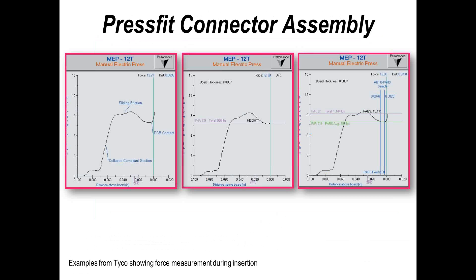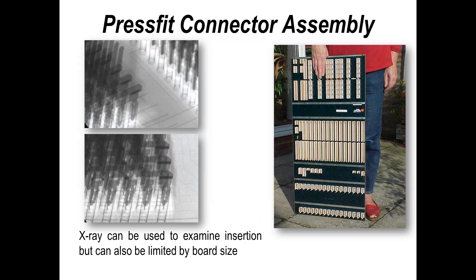Having an automated or semi-automated process minimizes the possibility of damage. The connector is positioned over the holes to check alignment, then forced into the PCB. The key thing is not to flex the board in any way — the board must be completely supported so we don't damage any previously produced solder joints. There must also be clearance on the opposite side if you've got connector pins longer than the board thickness. Most high-end companies or contract manufacturers use automated processes. The press shown here gives a force measurement, indicating the force applied. You can see the initial force, then the force as the connector goes into the hole, giving sliding action on the through-hole metallization, then contact with the PCB. You can automate this process and it's good for traceability.